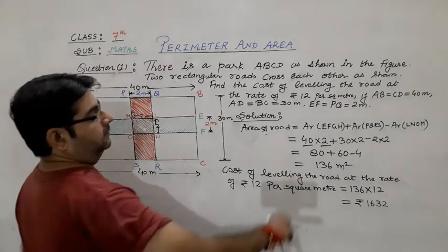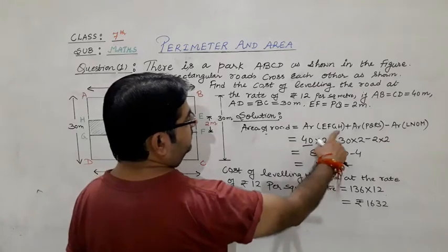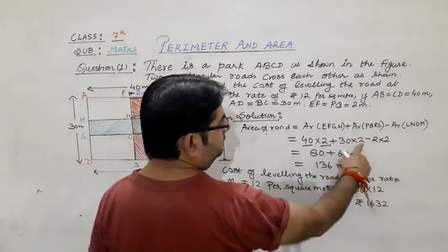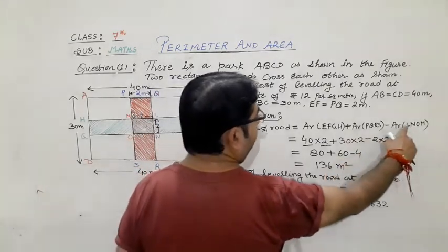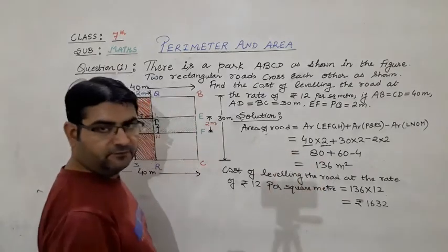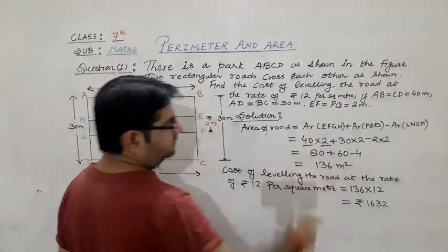So we calculated the area of EFGH, we got 80. Area of PQRS, 30 into 2, that is 60. And area of MLNO is 2 into 2, 4. So 80 plus 60 equals 140, minus 4 equals 136.